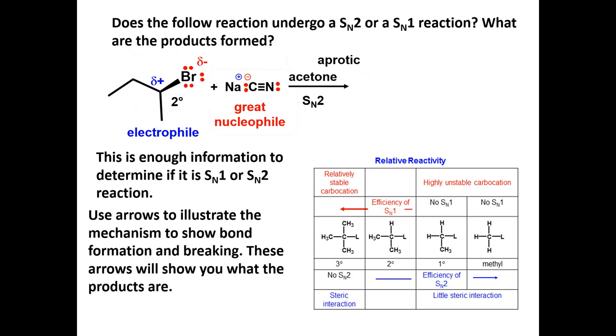Use arrows to illustrate the mechanism and show bond formation and breaking. These arrows will show you what the products are. Now, negative goes to positive. The electrons on the cyanide ion's carbon will attack the partially positively charged carbon on the electrophile.